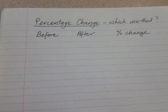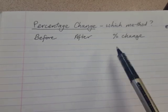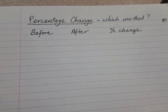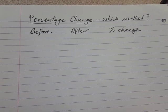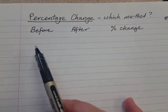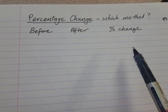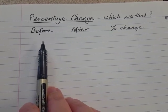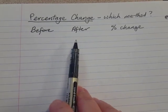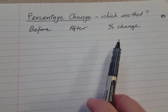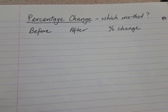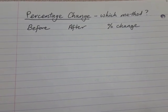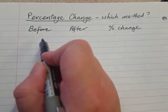Hi everyone. In this video we're going to look at how do you figure out which method to use for a percentage change question. There are three elements in every percentage change question: the amount you have before the change, the amount you have after, and what percentage it was.